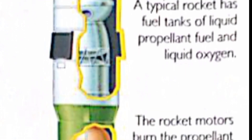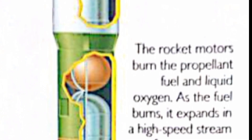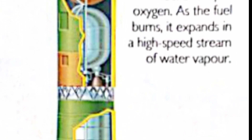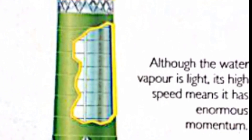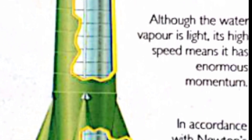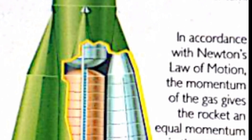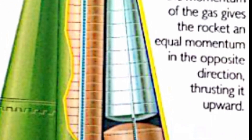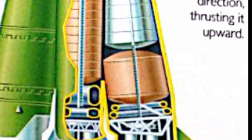How does a rocket work? A rocket typically has fuel tanks of liquid propellant fuel and liquid oxygen. The rocket motors burn the propellant fuel and liquid oxygen; as the fuel burns, it expands into a high-speed stream of water vapor. Although the water vapor is light, its high speed means it has an enormous momentum. In accordance with Newton's law of motion, the momentum of the gas gives the rocket an equal momentum in the opposite direction, thrusting it upward.